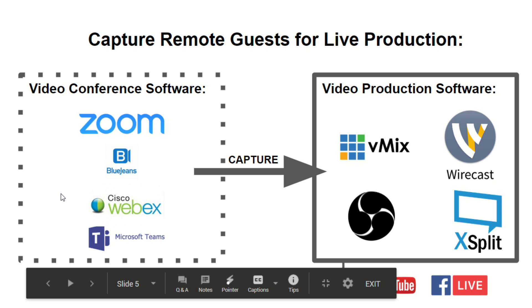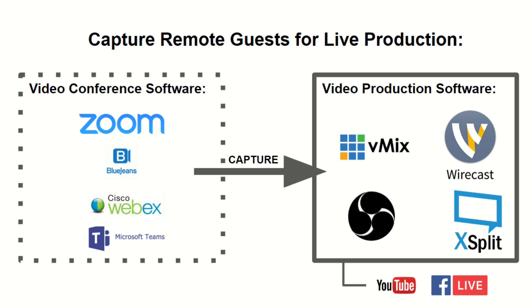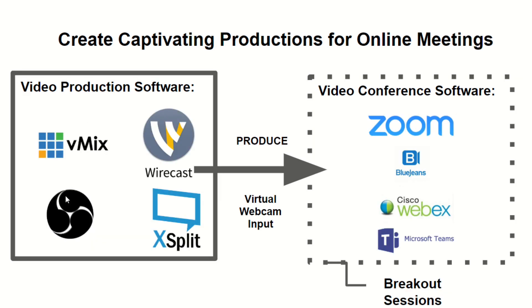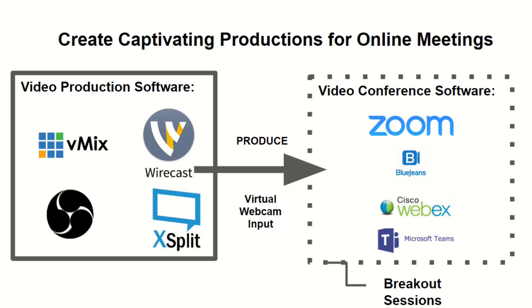Don't forget about the on-demand video access and collaboration tools available to you. You can capture a Zoom video conference into video production software — vMix, Wirecast, or OBS — and then live stream that to YouTube and Facebook. On the flip side, you can use video production software like vMix, Wirecast, XSplit, or OBS to pump multiple cameras, lower thirds, graphics, and videos directly into Zoom, BlueJeans, or Webex through a virtual webcam source.